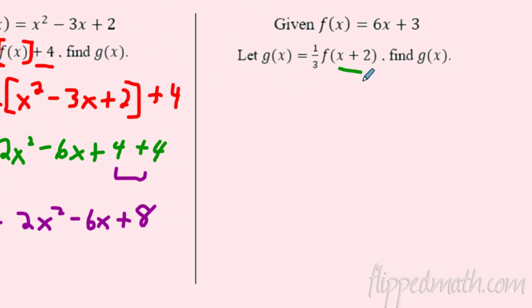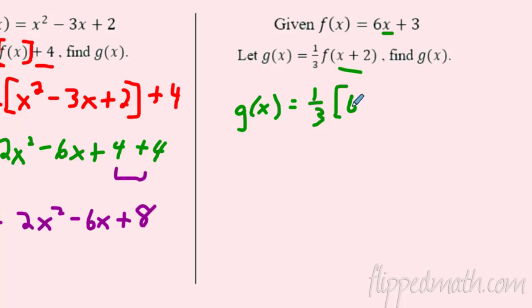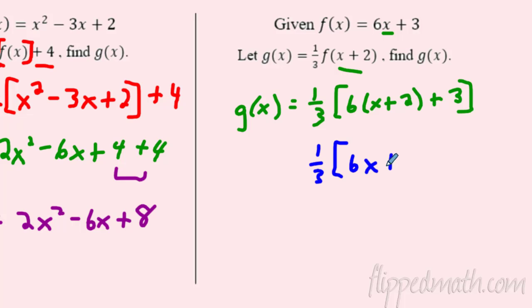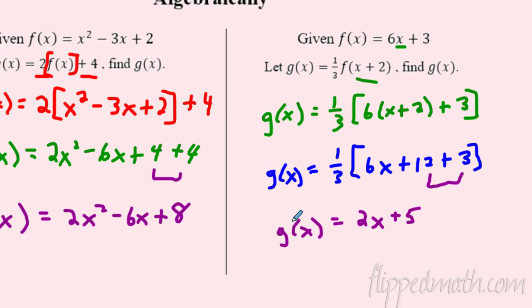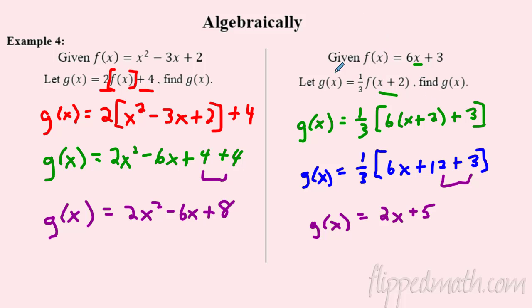This next one has a horizontal shift and a vertical compression of one third. To create g(x), it's one third of the whole function, and wherever there's an x I replace it with x + 2. So I bracket the function and substitute: one third times [6(x + 2) + 3]. First clean up inside: distribute the six to get 6x + 12 + 3, which simplifies to 6x + 15. Then distribute the one third: one third of six is 2x, and one third of 15 is 5, giving g(x) = 2x + 5.